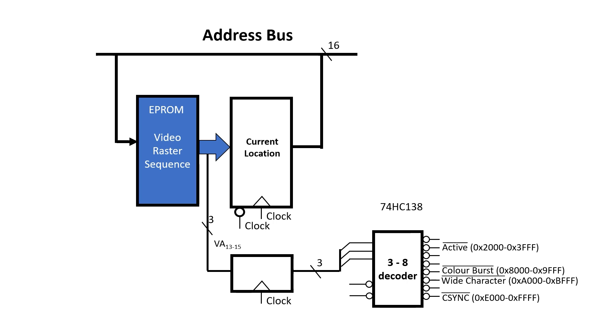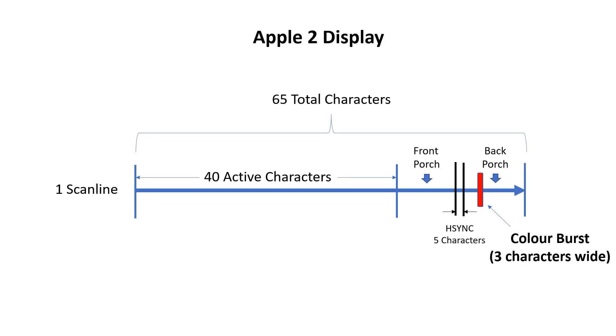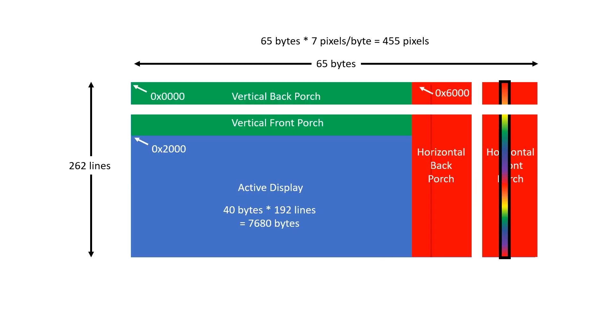Now if we go back to the circuit I used for the raster generator, one of the outputs of the 74HC138 is this wide character signal from A000 to BFFF. What I want is for one single character to be 8 pixels wide. So I'm going to add in a one character wide signal into the scan line, and I'm going to put this in the front porch. Just as I've done with HSYNC and Color Burst, I need to program this into the raster generator EPROM, but I'll save the actual code for the bring up video.